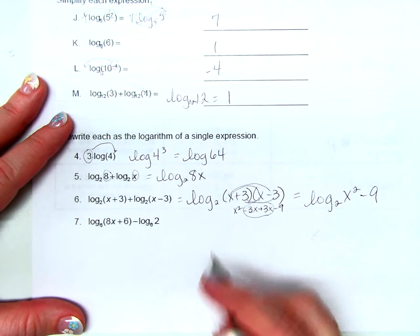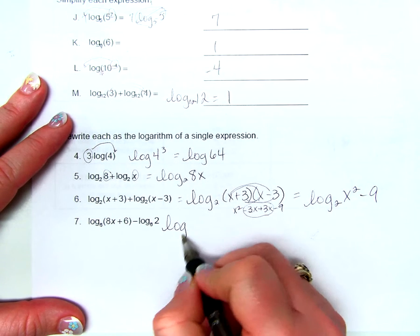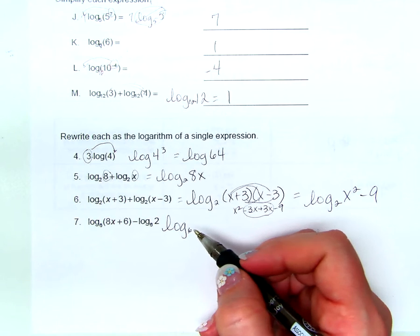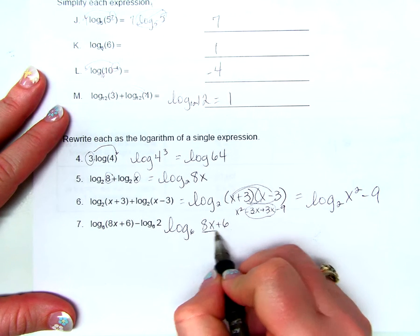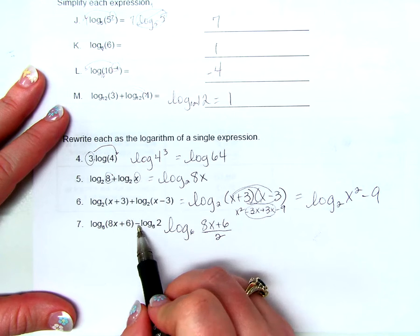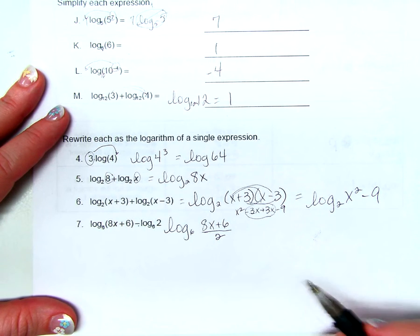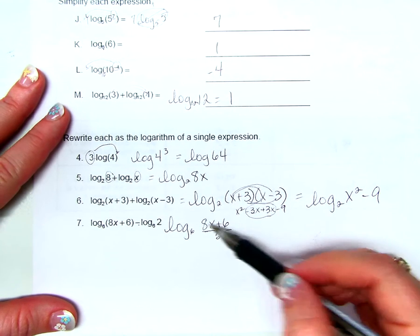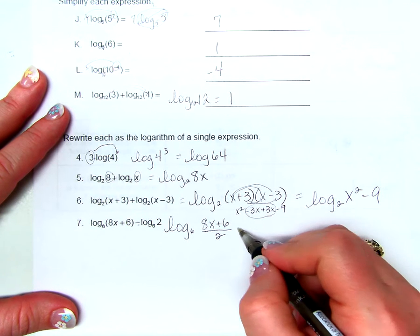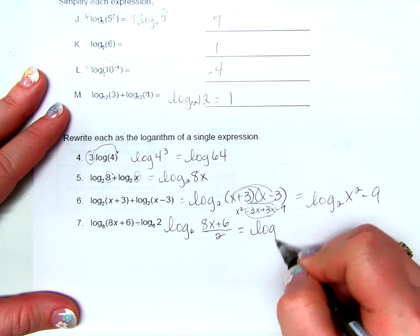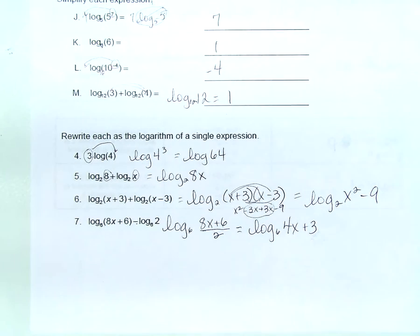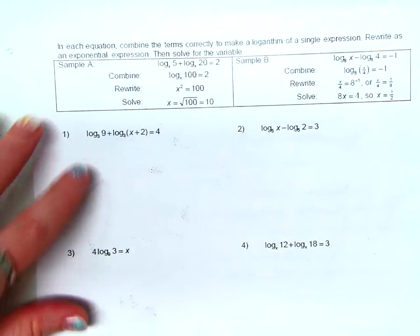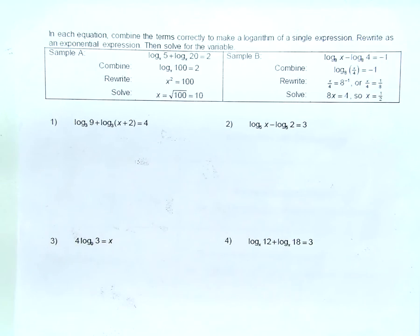Last example: log base 6 of 8x plus 6 over 2. Subtracting the two logs means dividing their arguments. Each term in the numerator is divisible by 2, so we can simplify one step further to log base 6 of 4x plus 3. When we know properties like this, we can solve logarithmic equations.